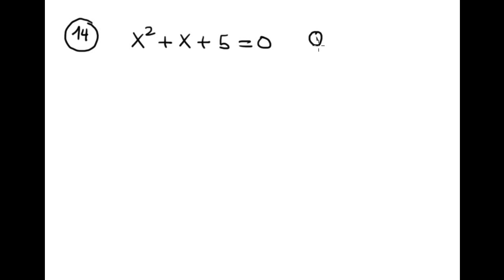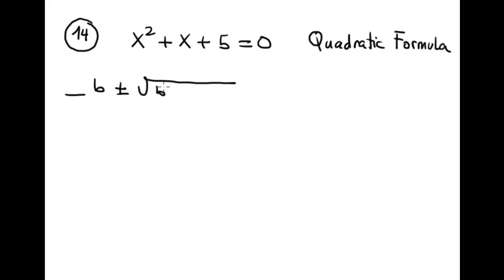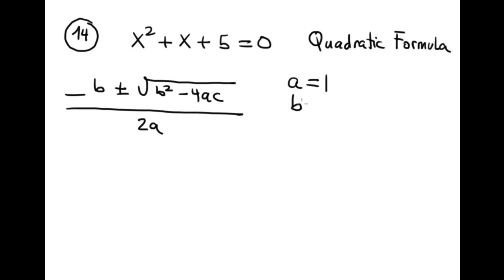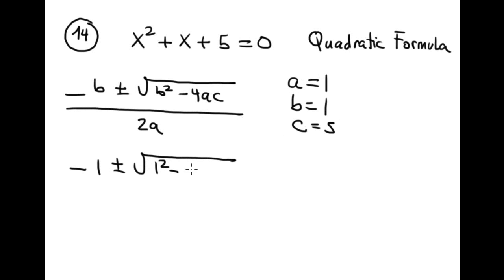In this case I am using the quadratic formula: x = (−b ± √(b² − 4ac)) / 2a. In our case A is 1, B is 1, and C is 5. Plugging into the formula gives: (−1 ± √(1² − 4·1·5)) / 2.